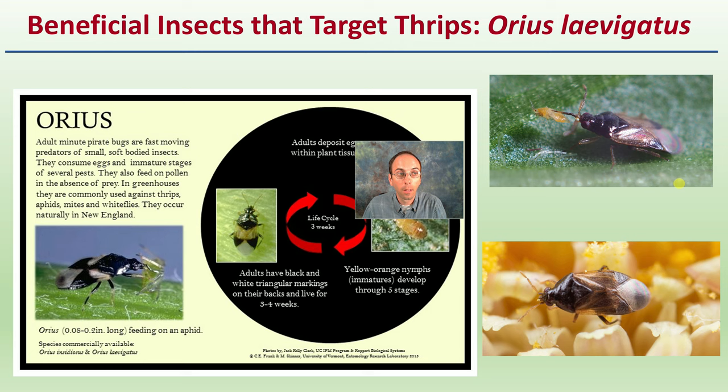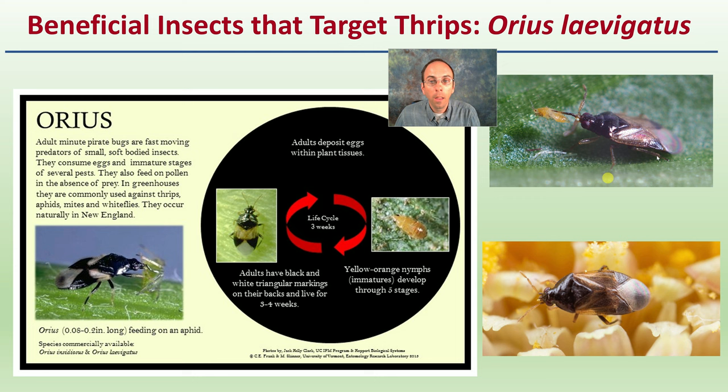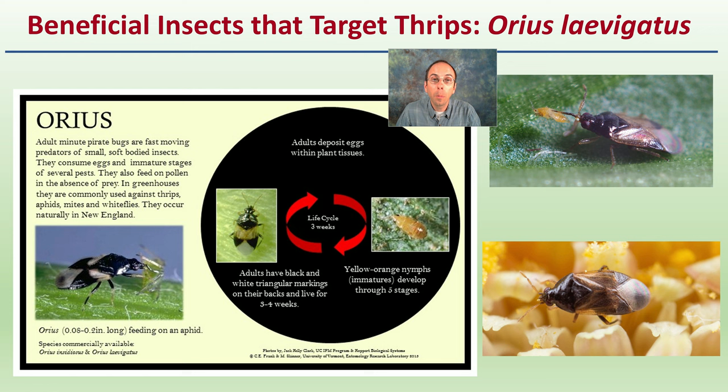The other beneficial insect shown here is Orius. Its life cycle is completed in about three weeks, and it has a very darkened, blackened back. It's a fast-moving predator — small and soft-bodied. It can also feed on pollen in the absence of prey, so you could potentially sustain this population within your greenhouse by growing flowering plants that provide pollen, keeping their populations going to help with thrip control.